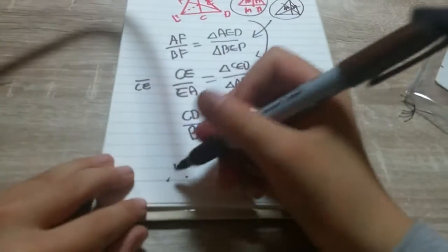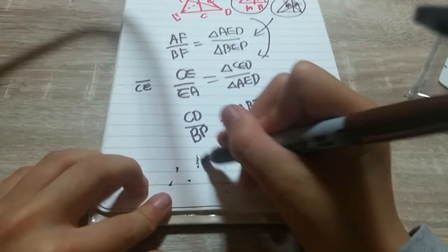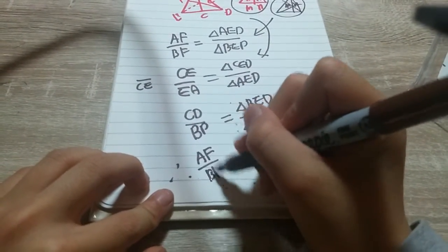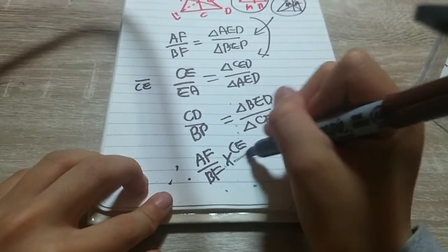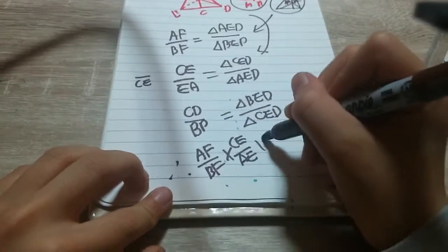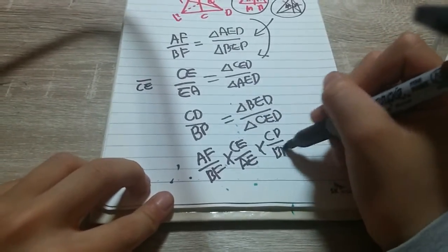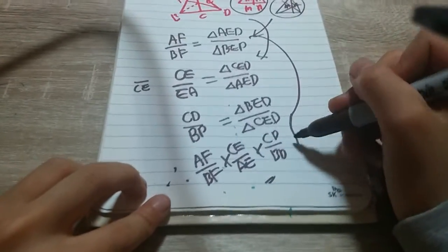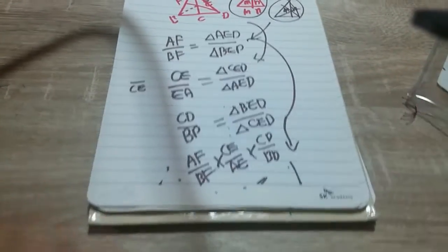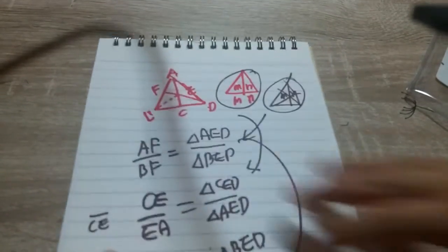So the Menelaus theorem, which is AF over BF multiplied by CE over AE multiplied by CD over BD, equals these three multiplied, which all cancels out to make one. Okay, so it took like four minutes to prove the Menelaus theorem, and it'll take one minute to prove the Ceva theorem.